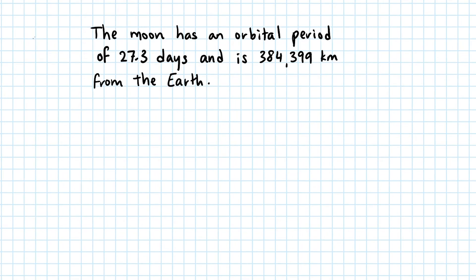Here's an example question. The Moon has an orbital period of 27.3 days and is 384,399 kilometers from the Earth. Calculate the orbital velocity of the Moon.